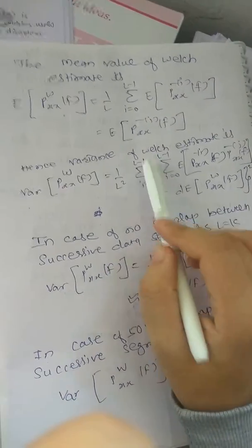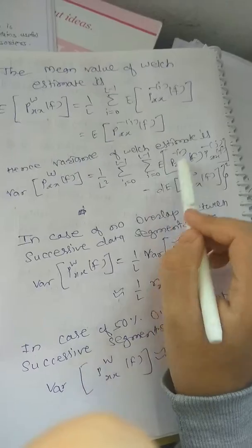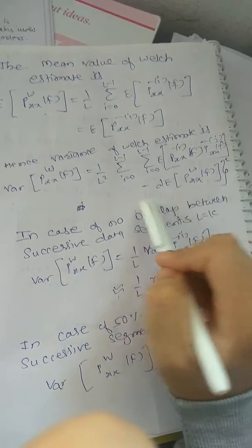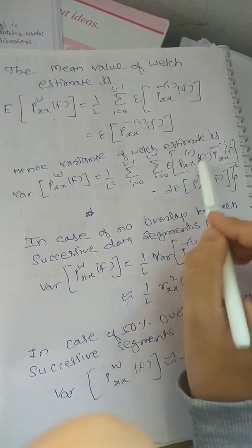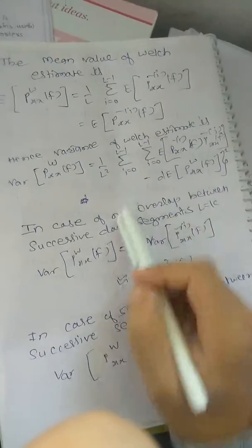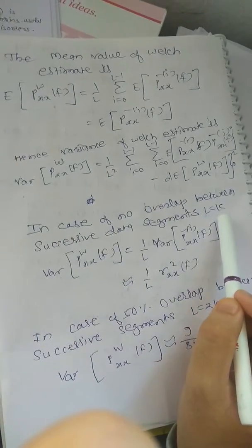Summation 0 to L-1, summation 0 to L-1, expected bracket minus E bracket P_xs_omega(f). In case of no overlap between successive data segments, L = K.